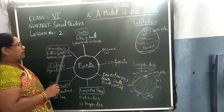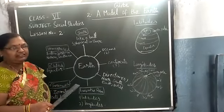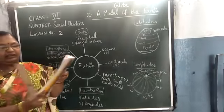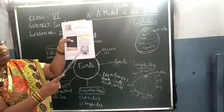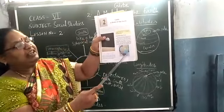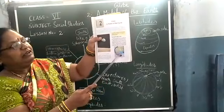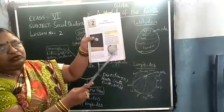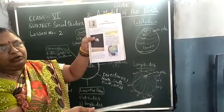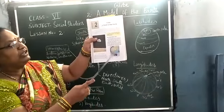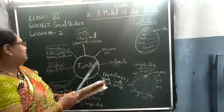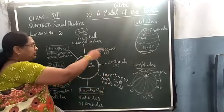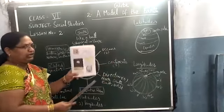As you all know how the earth is and how the globe is — globe is like this. You have to know about everything on the globe: oceans, continents, water bodies, countries, states, everything. You should know what is in the globe. This is the important introduction of this chapter, then we will go to the lesson.